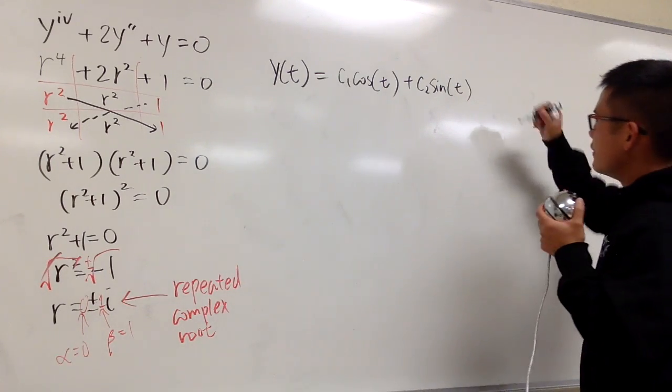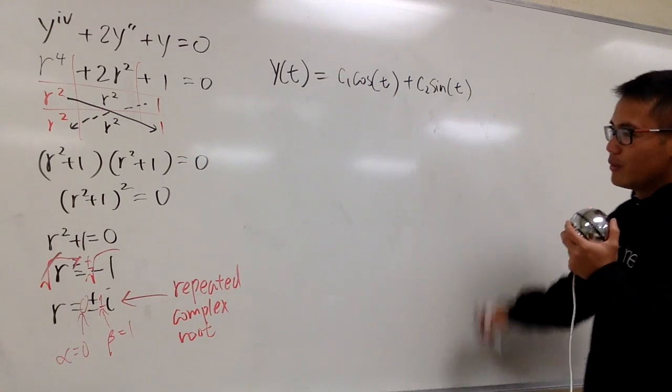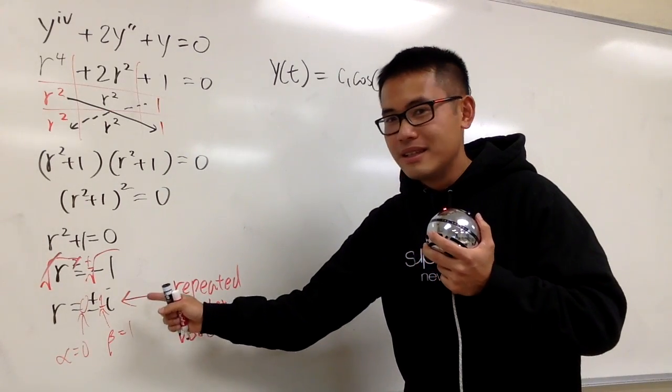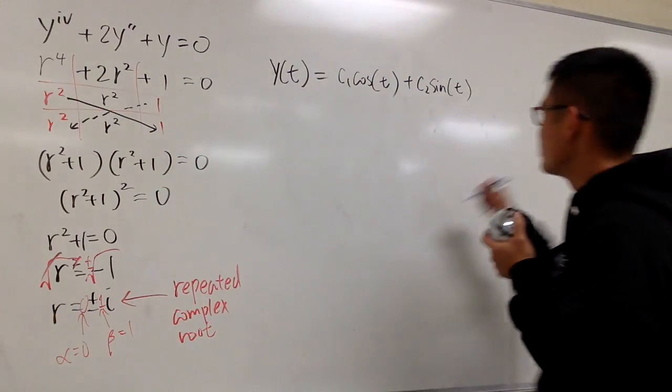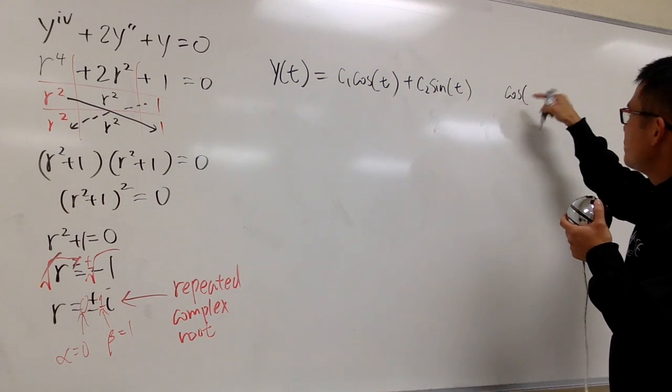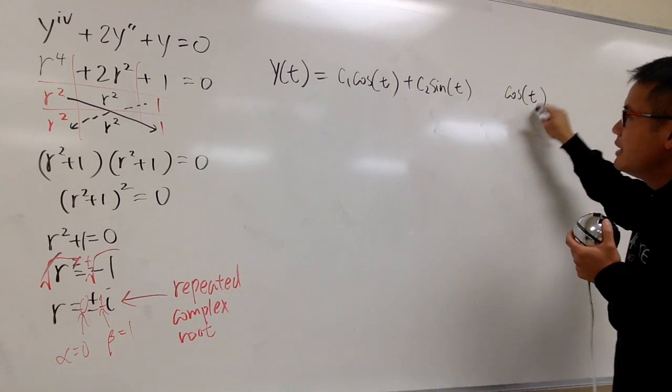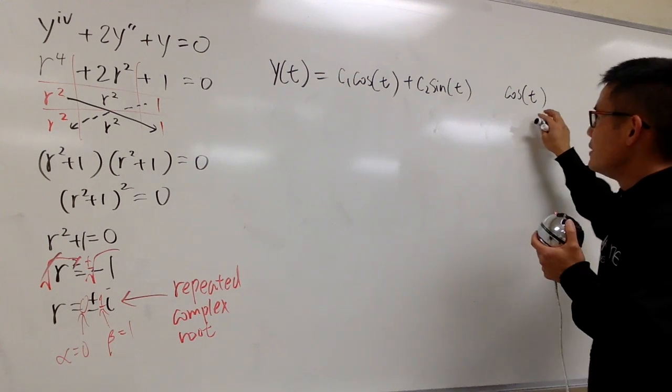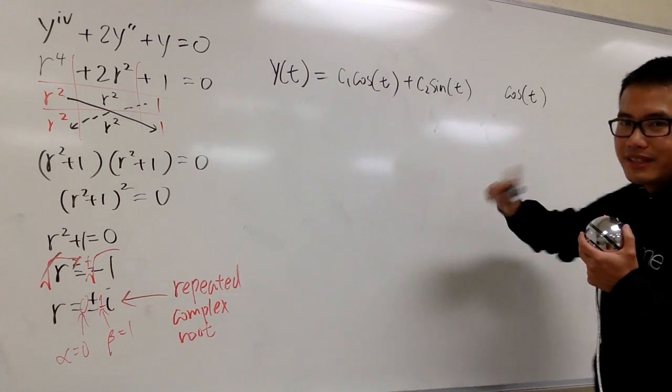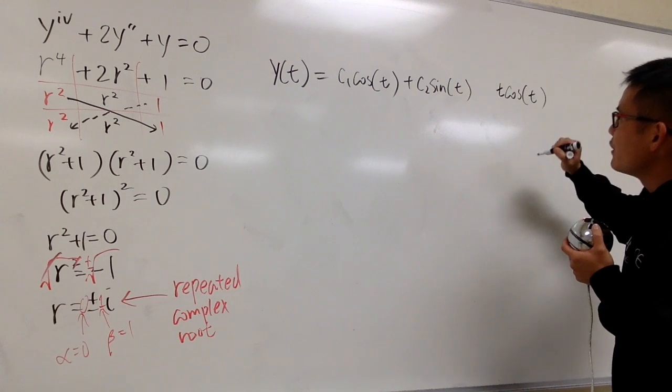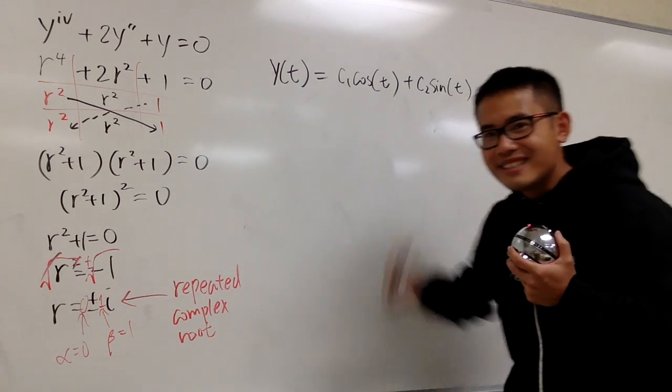So, the next building block is going to be still cosine of beta t. Let me just put this down right here. Cosine of beta, which is 1, and then t. But this would be the same as, well, this would be linearly dependent as that. Once again, I will just have to multiply by t right here to make them linearly independent.